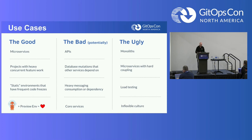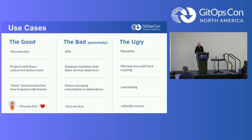The last one is more philosophical: an inflexible culture. There are organizations that have their static environments — dev, sys, UAT, production — and that's all they want to stick to. It's not a problem you can't change, but it can make it very difficult to get developers, DevOps folks, and the broader IT organization ready to embrace preview environments. In my experience, companies that are moving towards Argo and Kubernetes already have a more open mindset. But if it's an older legacy software company, it's a bit more challenging to bring that culture along.